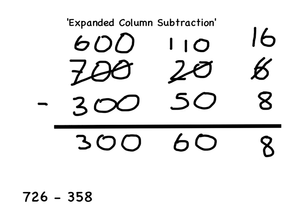Now the subtraction is complete and I've got my expanded answer. So if I put these numbers together I will get my answer: 300 add 60 add 8 gives me 368.